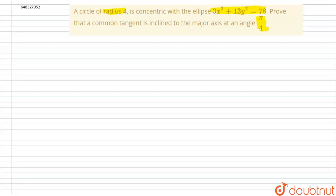What is the equation of the circle having radius 4? The equation of a circle is x² + y² = r², so we can write it as x² + y² = 4² = 16.